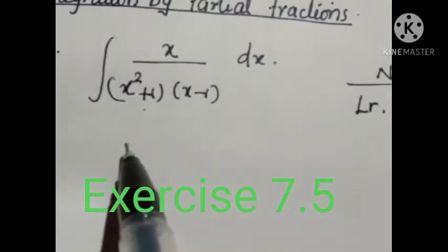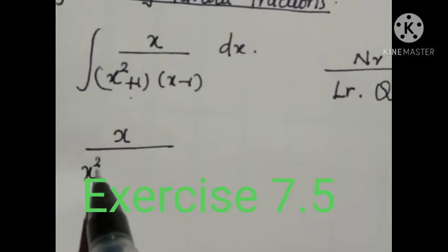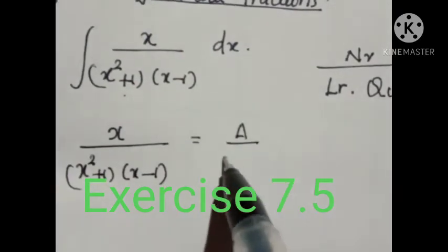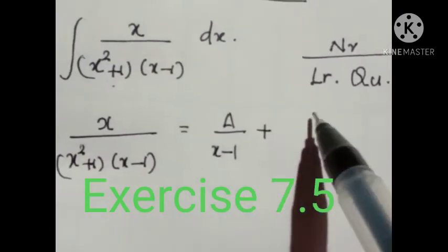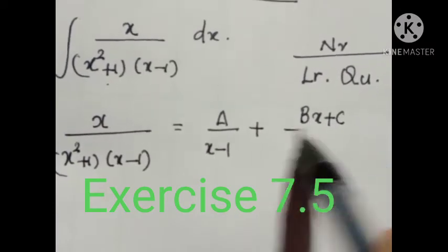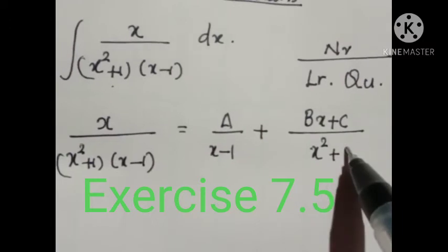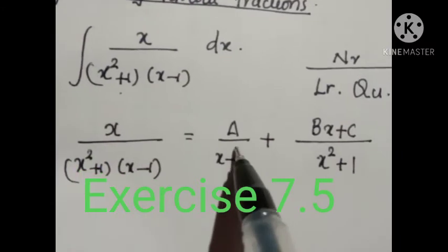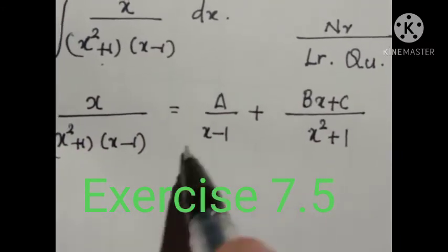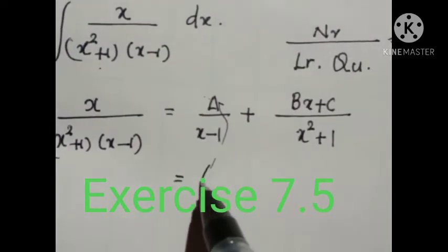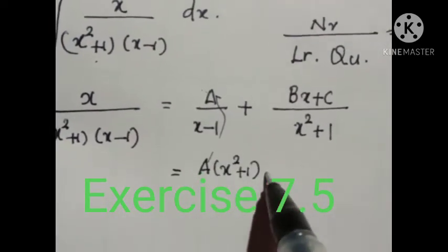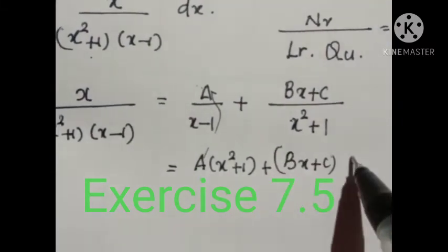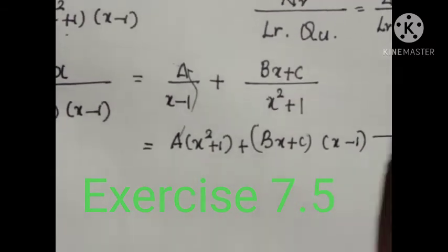Let us consider this integral x by (x² + 1)(x - 1). This can be written as A by the linear factor (x - 1), plus Bx + C by the quadratic factor (x² + 1). We split this integral as partial fractions. Now, as usual, take cross multiplication: A(x² + 1) + (Bx + C)(x - 1). Put this as equation number 1.